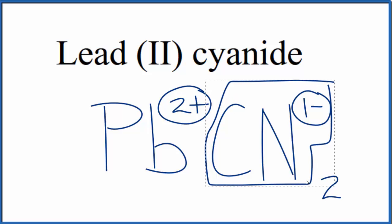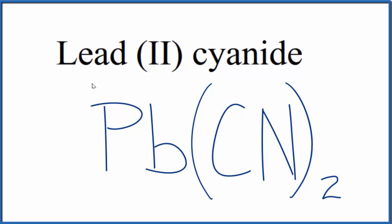So we can replace this with parentheses. And this is the formula for lead(II) cyanide, Pb(CN)₂. And this 2 means that we have 2 separate cyanide ions here in the compound.